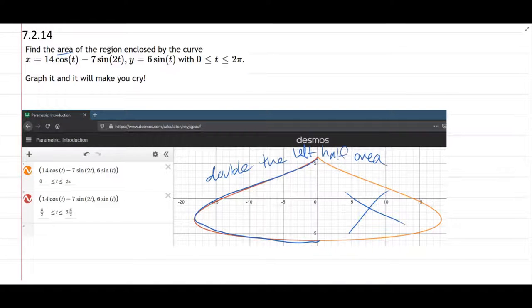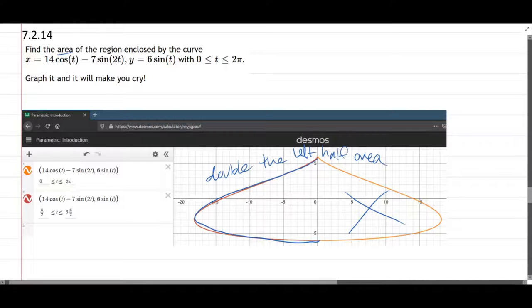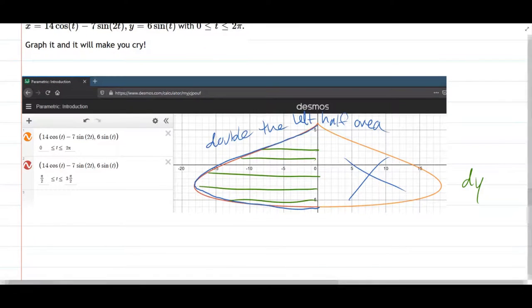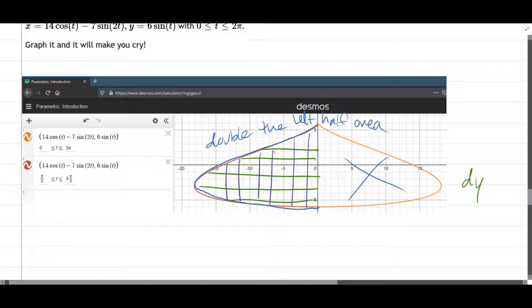We're going to go with horizontal, which would be a dy integral, or vertical, which would be a dx. Why is dx a bad idea?